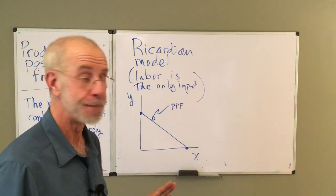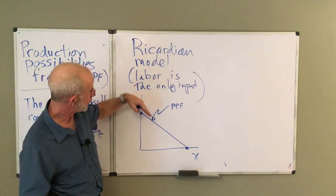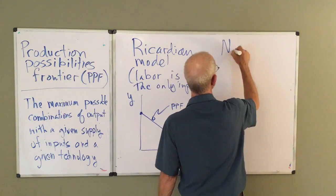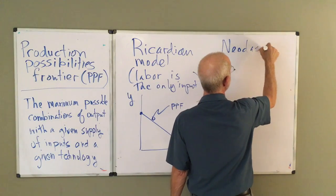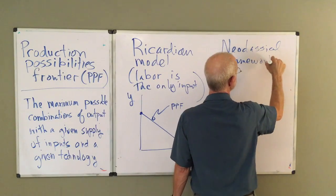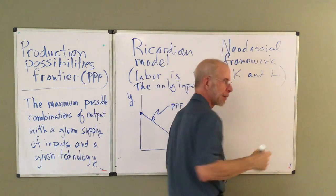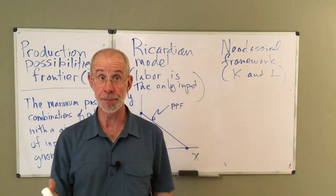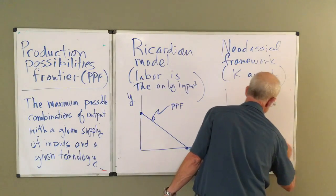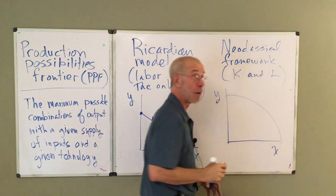Make a note of that. With labor as the only input, the PPF is going to be a straight line. If we're talking about a neoclassical framework, typically with capital and labor, but it's really what matters is that they're multiple inputs, the PPF is going to be bowed out.